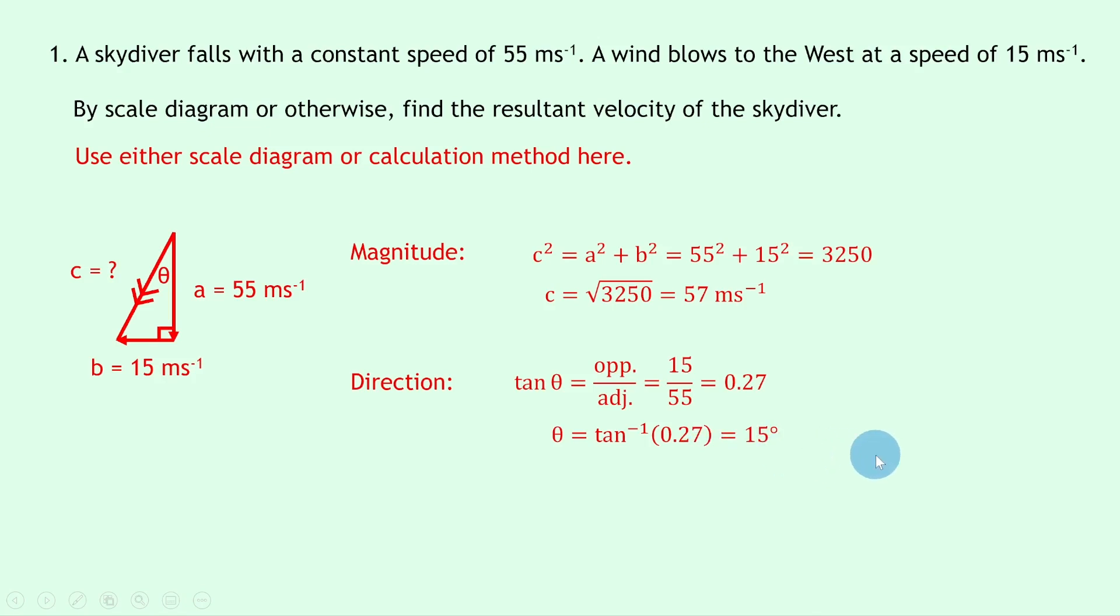We can then write down our final statement, but we need to write the angle as either a compass point or a bearing. We can say the resultant velocity is equal to 57 meters per second at 15 degrees west of south. To see that, you can look at the diagram—we've got south going down here, we've then got our angle of 15 degrees, and that means the resultant vector is 15 degrees away from south towards west.